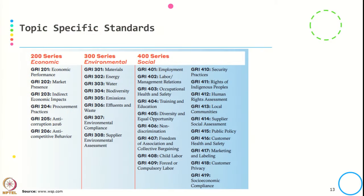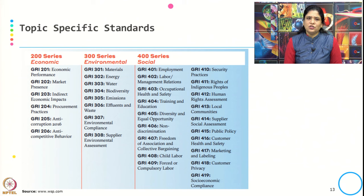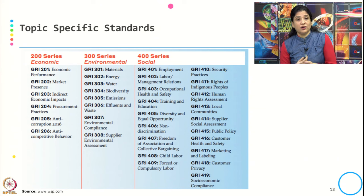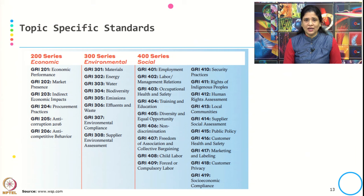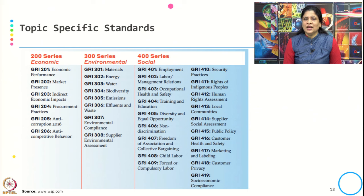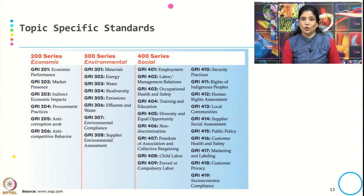The topic-specific standards are organized into three series: the 200 series covers economic topics including economic performance, market and anti-competitive behavior, and anti-corruption; the 300 series covers environmental topics starting from materials through compliance and supplier environmental assessment; and the 400 series covers social topics, with a long list starting from employment through to customer privacy, data privacy and socio-economic compliance.